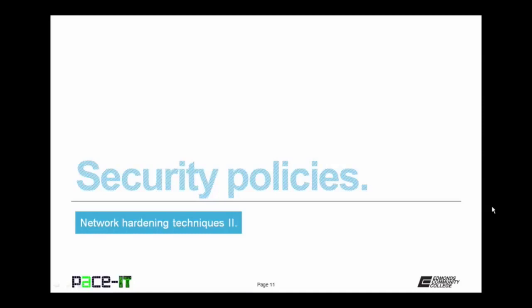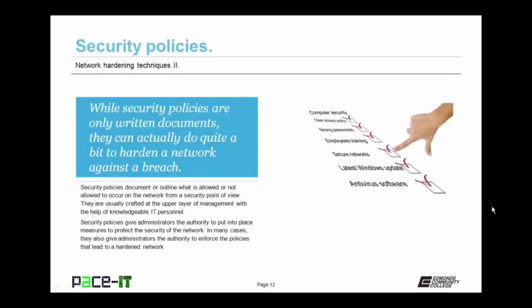It's time to conclude with a brief discussion on security policies. While security policies are only written documents, they can actually do quite a bit to harden a network against a breach. Security policies document or outline what is allowed or not allowed to occur on the network from a security point of view. They are usually crafted at the upper layer of management with the help of knowledgeable IT personnel. They establish the expected behavior, which can go a long way towards hardening your network. Security policies give administrators the authority to put into place measures to protect the security of the network and to enforce the policies that lead to a hardened network.